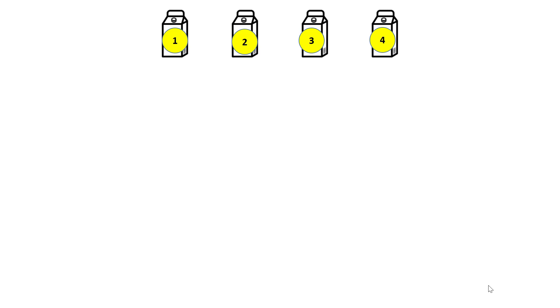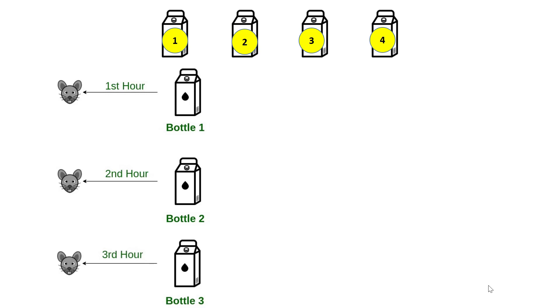First of all, label all the bottles from 1 to 4. Now, at the beginning of the first hour, feed the rat the first bottle. And then at the start of second hour, feed the second one. And similarly at the start of third hour, feed the third bottle.